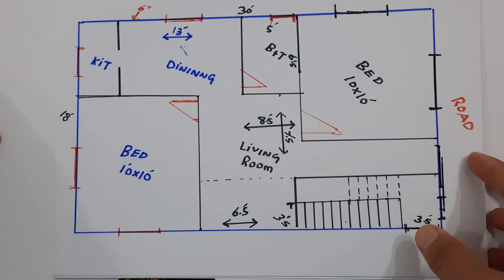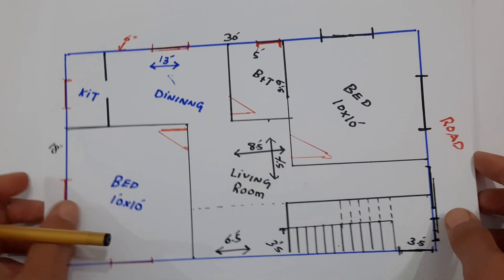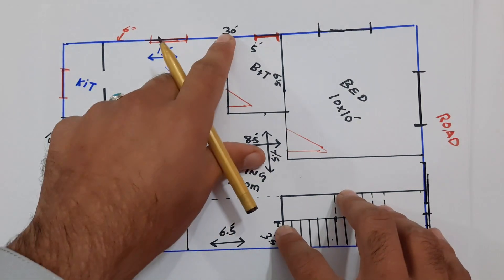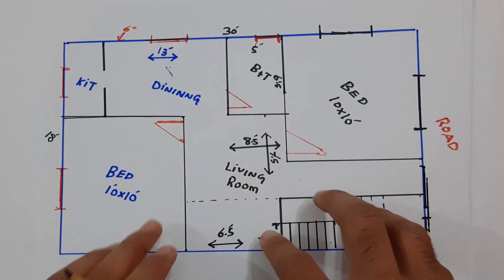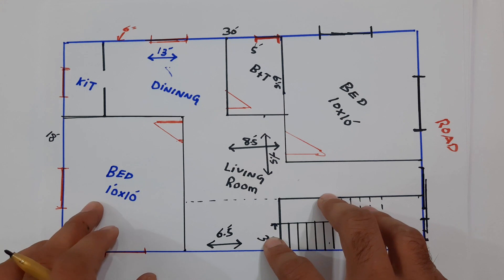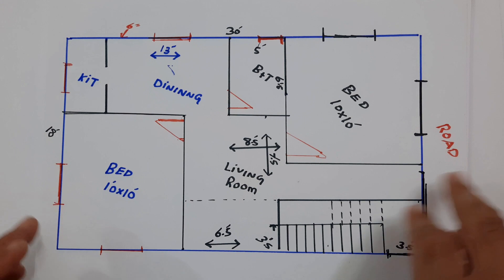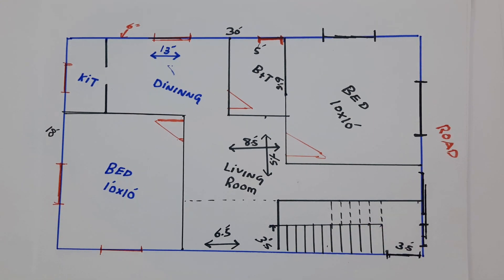Okay guys, so this is a small house planning in the dimensions of 18 by 30 feet. So if you have any question related with this planning, you can comment. I will try to reply your answer. Thanks for watching, see you in next video. Goodbye, bye.